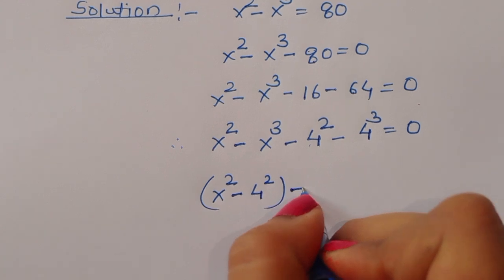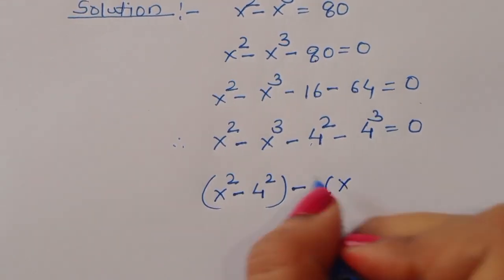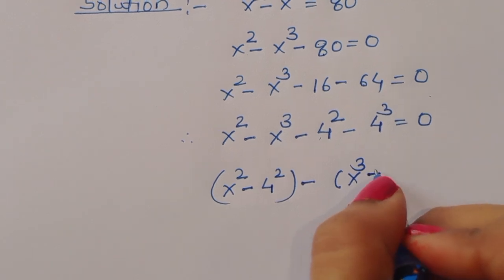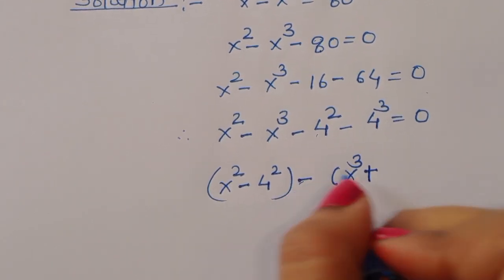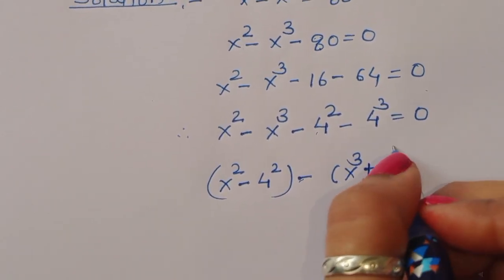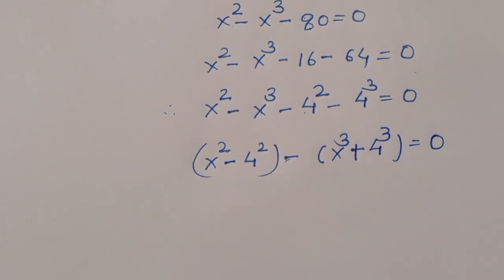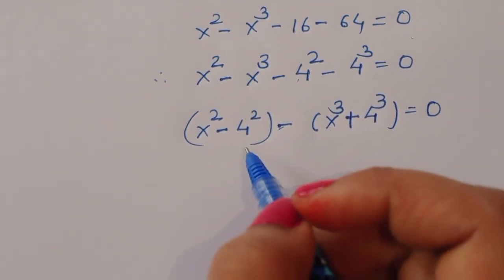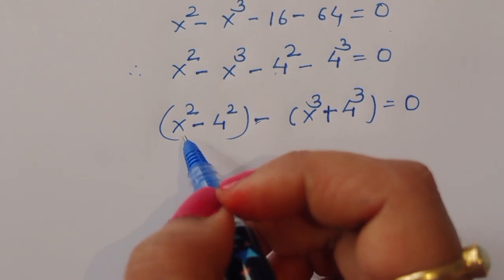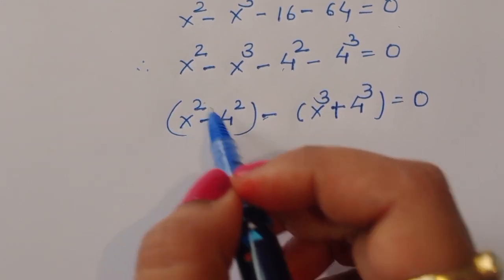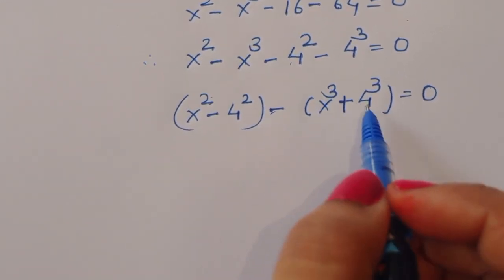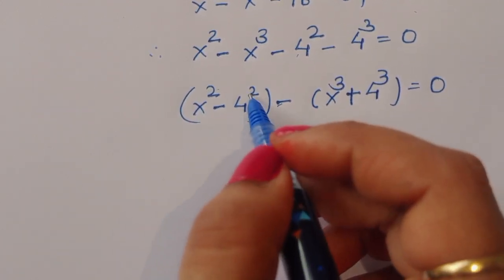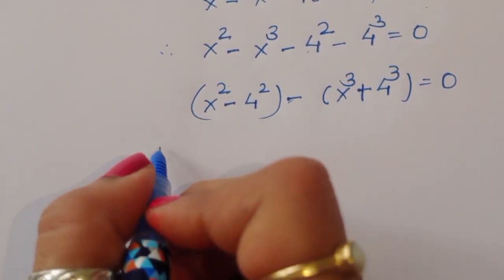Arranging the terms: x squared minus 4 squared, and then taking minus common from the remaining terms to get minus (x cubed minus 4 cubed) equals 0. We now have two recognizable formula forms: a squared minus b squared, and a cubed minus b cubed.